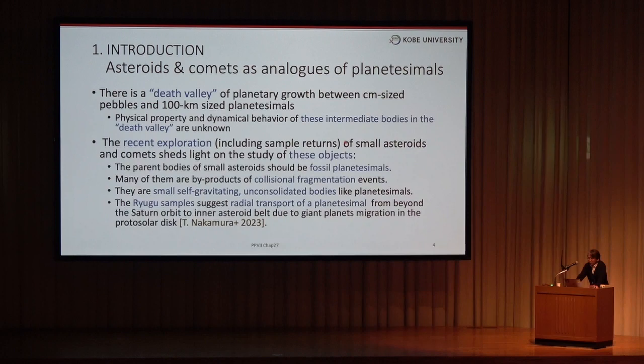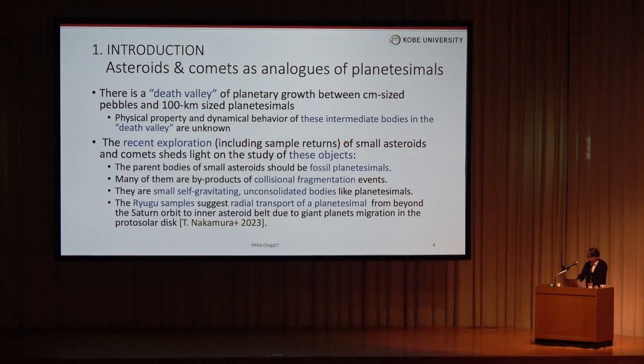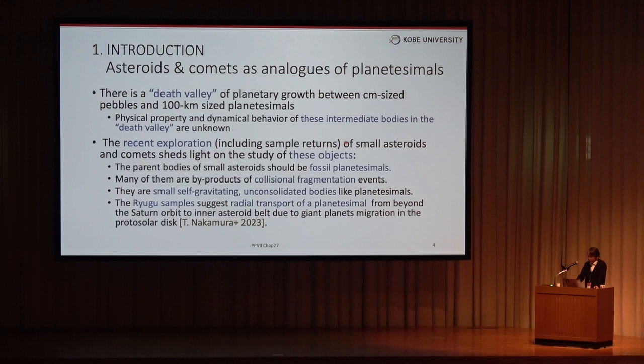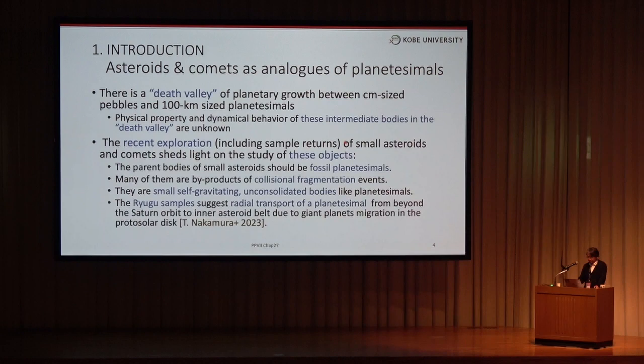Asteroids and comets may be a good analog of planets to Mars. There is a death barrier of planetary growth between centimeter-sized pebbles and 100-kilometer-sized planets. The physical properties and dynamical behavior of these intermediate bodies in the death barrier are still unknown. The apparent bodies of small asteroids should be fossil planetesimals, and many of them are byproducts of collision fragmentation events. They are small, self-gravitating, unconsolidated bodies like planetesimals. The Ryugu samples suggest a radial transport of planetesimals from beyond the Saturn orbit to the asteroid belt due to giant planet migration in the proto-solar disk.